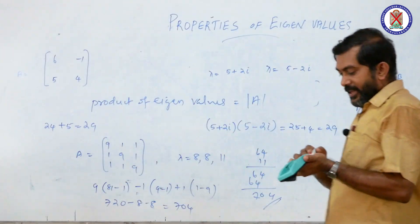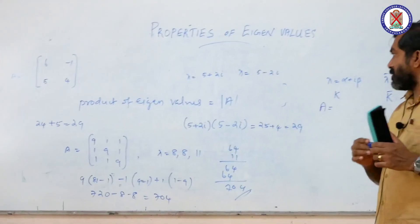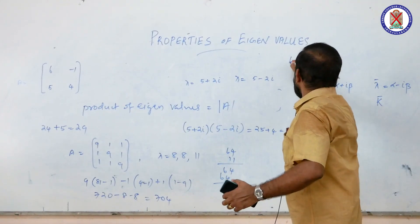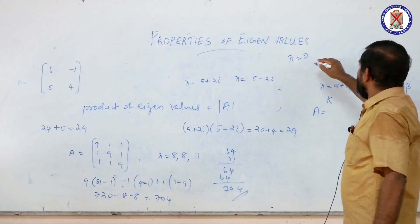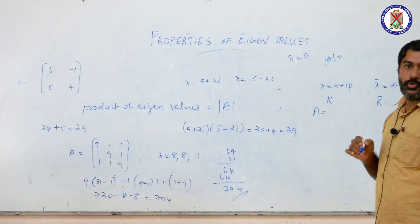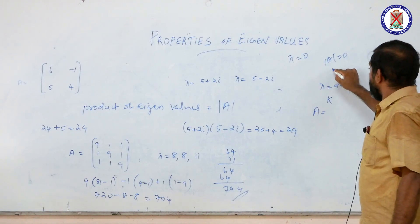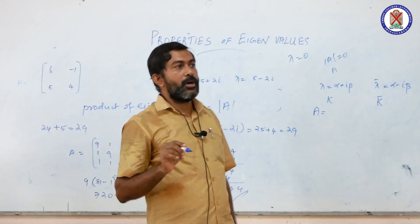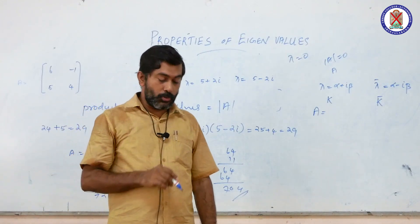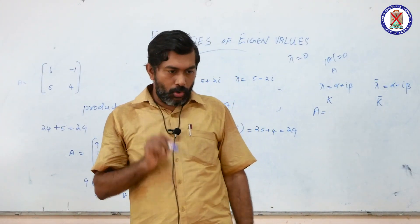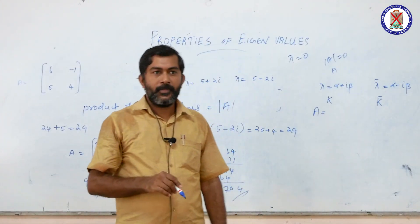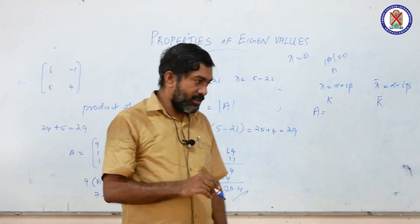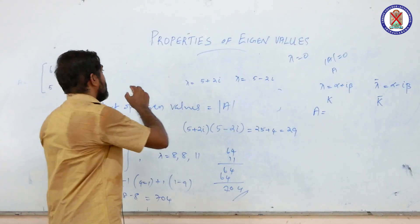By evaluating the eigenvalues of a matrix, we can easily determine whether a matrix is singular or non-singular. If lambda equal to 0 is an eigenvalue, then the product of eigenvalues gives a determinant of 0, so the matrix is singular. Conversely, if all eigenvalues are non-zero, the matrix is non-singular.